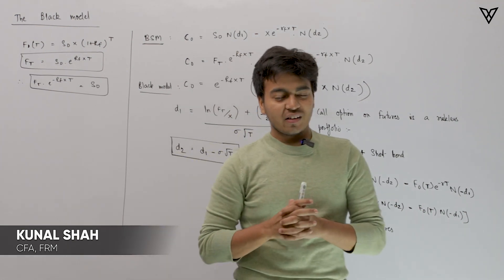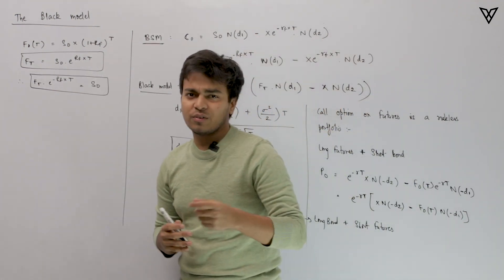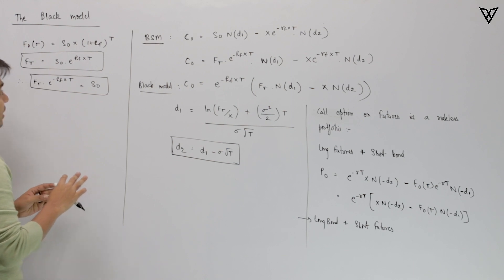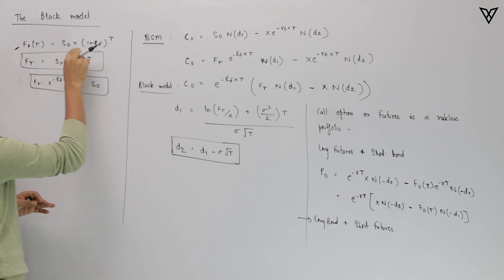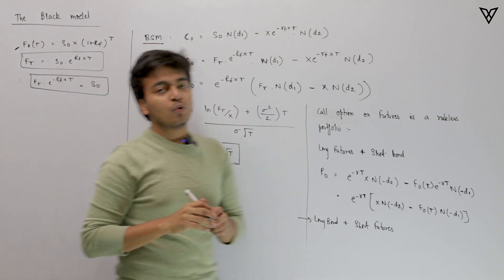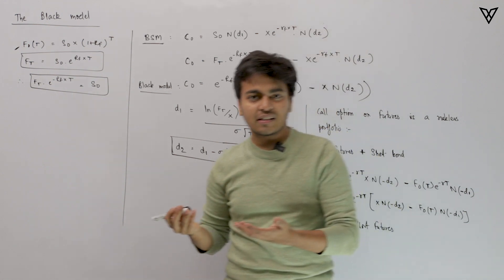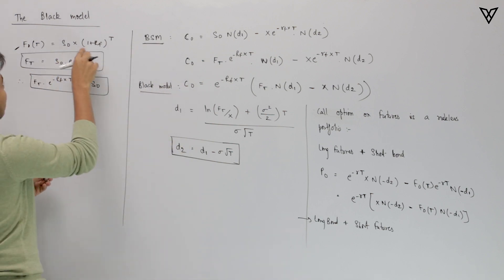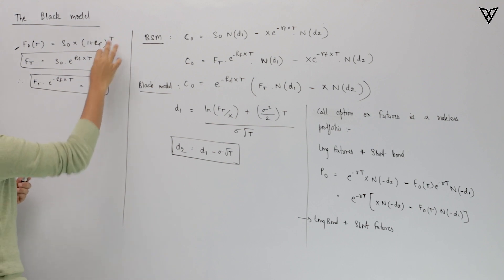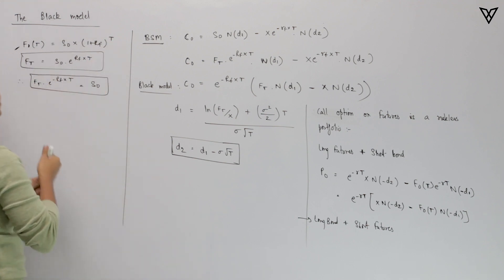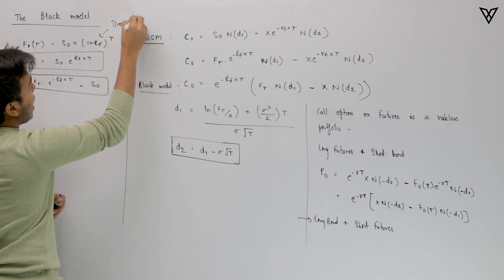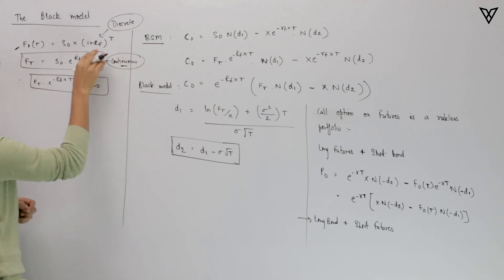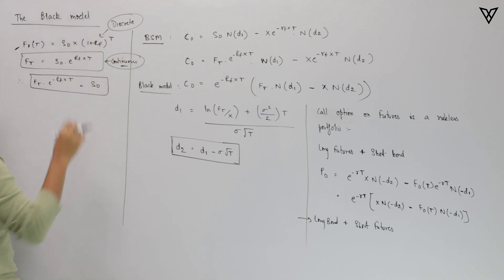In this video we are going to discuss the Black model, a variant of the BSM model we have studied so far. Before we get started I would like to revisit the formula: F0,t = S0 × (1 + rf)^t. When there are no benefits or costs involved with the asset class, the forward price is calculated by taking the spot price and multiplying by the risk-free rate compounded for time period t. This is for discrete time. For continuous time, instead of (1 + rf)^t we have e^(rf × t).